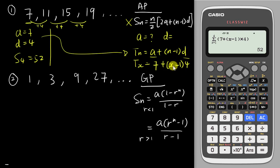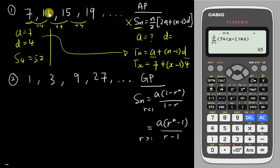You substitute your 'a' value as 7, replace 'n' with x, and enter 'd' as 4. A great advantage of this approach is that you're not restricted to summing from the first term. The standard Sn formula always sums from the first term, but with the sigma button you can change the starting x value. For example, to sum only the second, third and fourth terms, change the start to 2 — you get 45, which is just 52 minus 7. This is especially useful if you want to sum, say, from the fifth to the eleventh term.